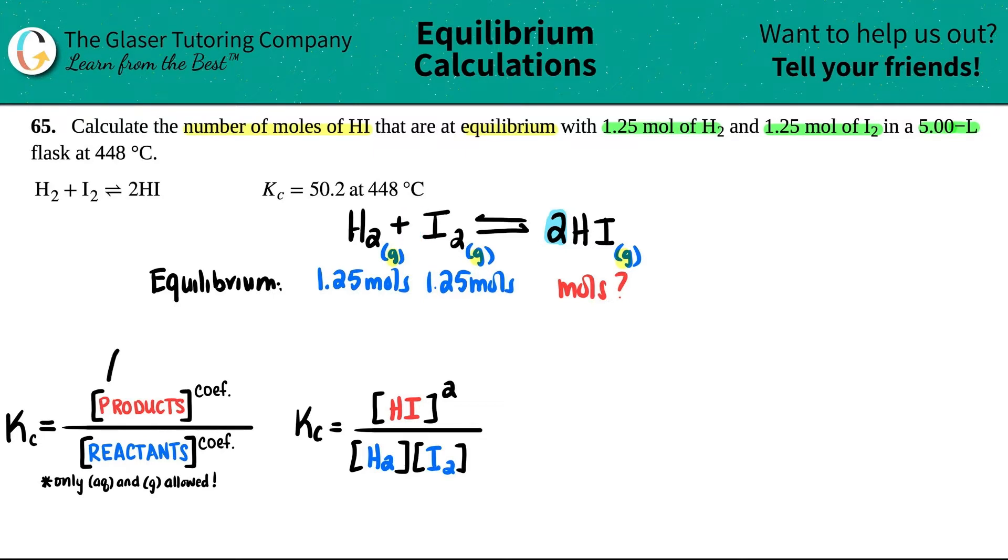But now, what does these brackets mean? I keep writing these brackets over and over and over again. The brackets stand for molarity, capital M. But uh-oh, we have moles. I can't plug in moles into this formula. I'm only allowed molarity. So how do I go from moles to molarity? Ah, this is going back a couple of chapters. Remember that formula, guys. Molarity equals moles divided by liters.